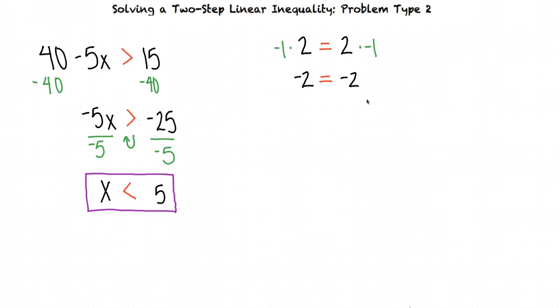However, let's see what happens if we try to do the same thing with an inequality. The inequality 2 is less than 5 is a fact because the number 2 is less than the number 5.